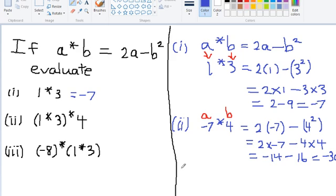Part 3. We have negative 8 star 1 star 3 in brackets. If we go back to our answer for part 1, we got negative 7 for 1 star 3. So we are replacing the bracketed term by negative 7. So we have negative 8 star negative 7.